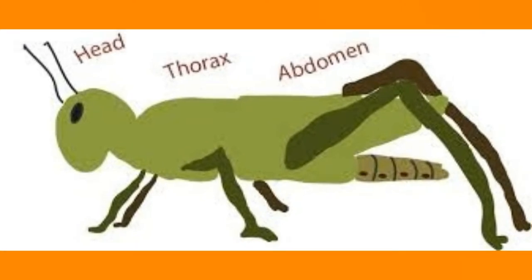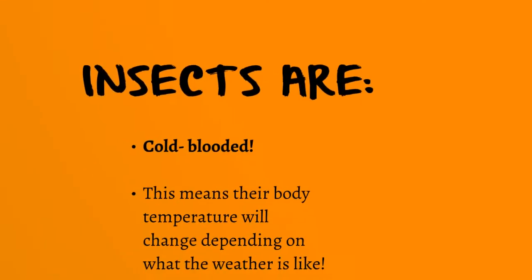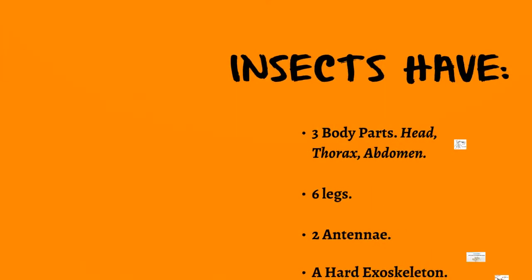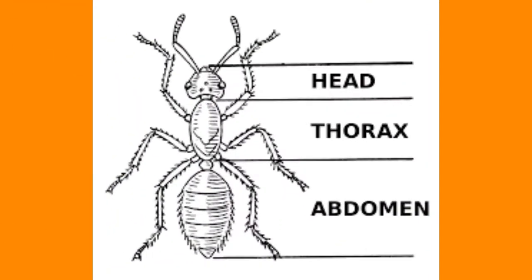This is a grasshopper — it's got really big legs at the bottom of the thorax. Insects are cold-blooded, which means their body temperature will change depending on what the weather is like outside. They have three body parts — the head, the thorax, and the abdomen — six legs, two antennae, and a hard exoskeleton.